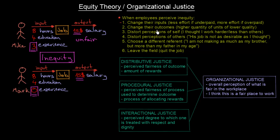Secondly, change their outcomes — higher quantity of units but of lower quality. Imagine both Mike and Mark are making TVs and getting paid per unit. Mike might suddenly start producing more TVs to receive a higher salary, but of course this will be of lower quality.